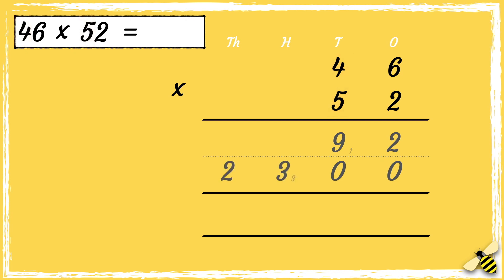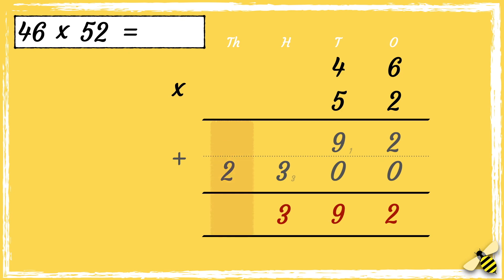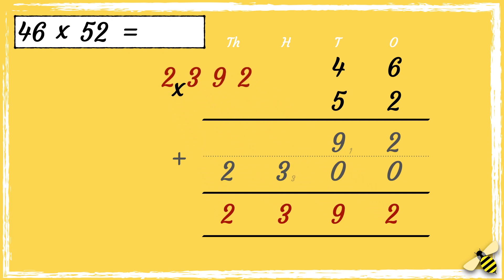The next step is to add the two answers together. Two add zero is two; nine add zero is nine. Then we're left with three hundred, and then two thousands, so the answer is two thousand three hundred and ninety two.